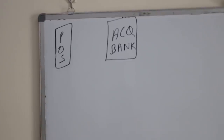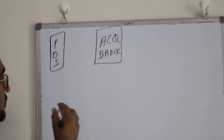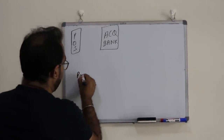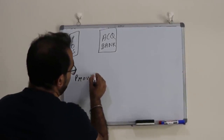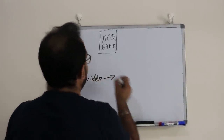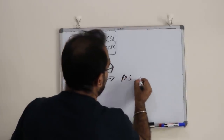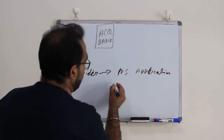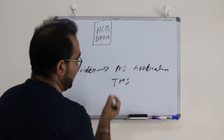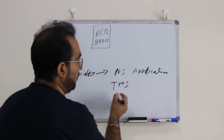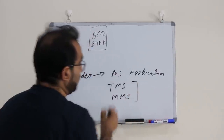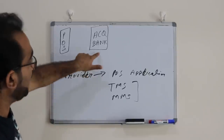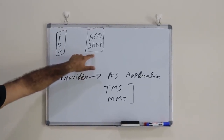Normally, if a bank is an acquirer, they use the services of any POS provider. There can be a POS provider who installs the application. We normally call it TMS or MMS, which is a Terminal Management System or Merchant Management System. This is a separate application connected to the network or head of the acquiring bank.